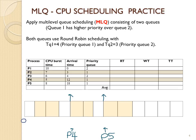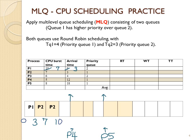Starting at time zero, the only process that has arrived is p1. P1 uses round-robin with time quantum 3, but since it's priority 2 we check at each time unit for the arrival of a priority 1 process. Since priority 1 does not arrive until time 3, p1 finishes its complete time quantum. At time 3 we have both p1 and p2 in the ready queue; p2 has higher priority so p2 goes and gets a time quantum of 4.